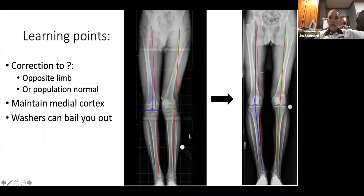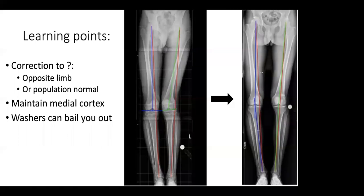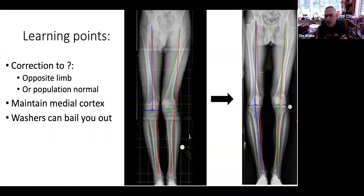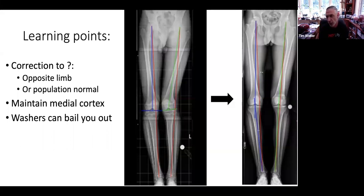A final question on this case: when using a blade plate with an open physis, what should be the distal extent, and how does an open physis impact use? Tim says he personally wouldn't use a blade plate across an open physis unless planning to close it. If the blade needed to go distal to the physis, a long discussion with the family would be needed about closing the opposite physis simultaneously or doing a lengthening procedure later, depending on age. He would try hard to preserve the physis if it was functioning appropriately.